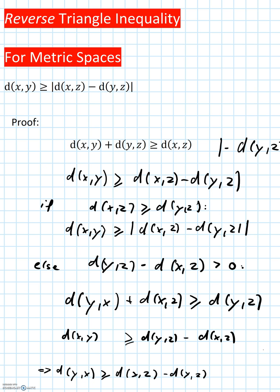Hello, let me show you a proof of the reverse triangle inequality in its general form for metric spaces. The reverse triangle inequality is the following inequality: d(x,y) is greater than or equal to the absolute value of d(x,z) minus d(y,z).